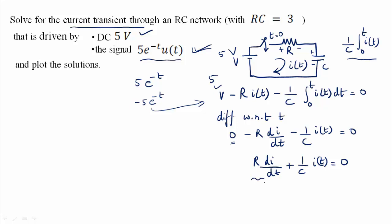It is the coefficient of di by dt — the highest coefficient. I will divide this by R. So divide by R. I am going to divide by R. This is the equation.